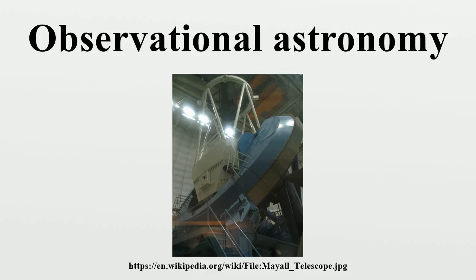For objects that are relatively close to the Sun and Earth, direct and very precise position measurements can be made against a more distant background. Early observations of this nature were used to develop very precise orbital models of the various planets, and to determine their respective masses and gravitational perturbations. Such measurements led to the discovery of the planets Uranus, Neptune, and Pluto. They also resulted in an erroneous assumption of a fictional planet Vulcan within the orbit of Mercury.